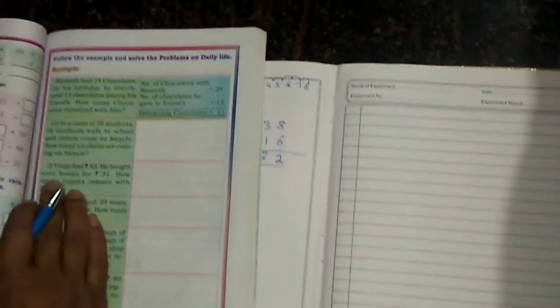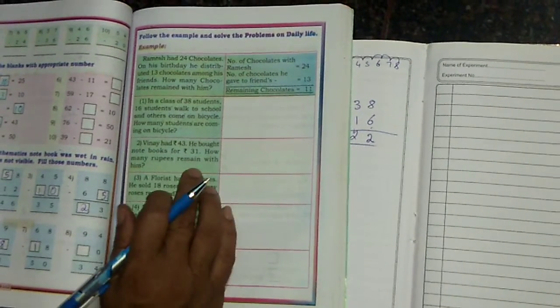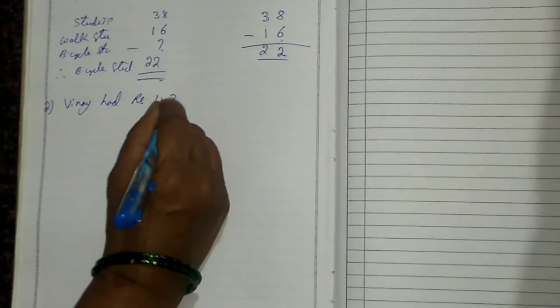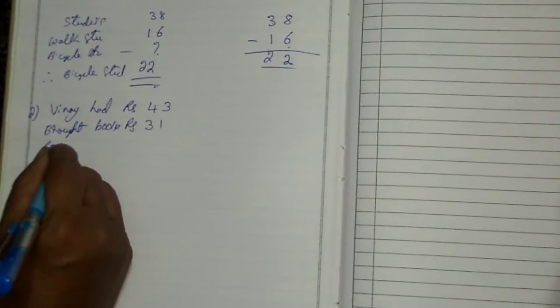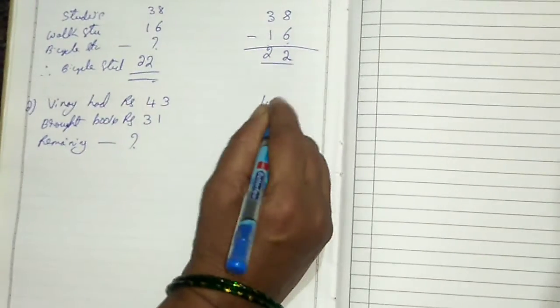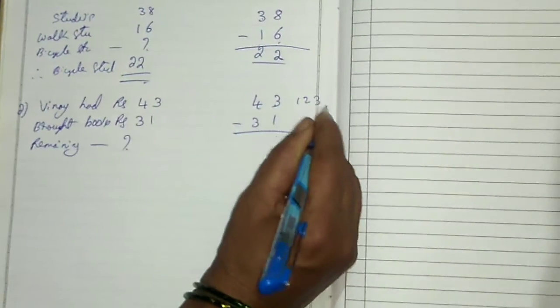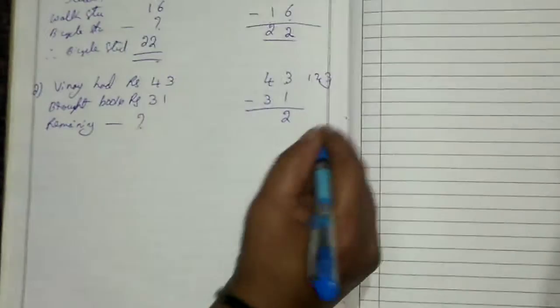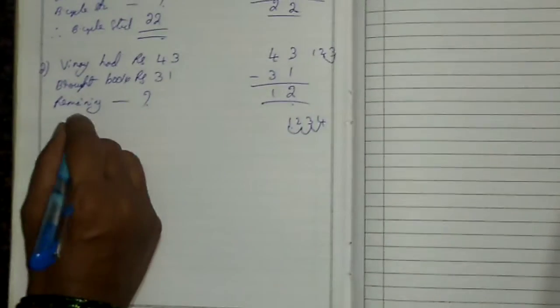Second one: Vinay had rupees 43. He bought notebooks for rupees 31. How many rupees remain with him? Vinay had rupees 43. Brought books — rupees 31. Remaining rupees we don't know, so we have to find. From 43 minus 31: 3 minus 1 — 1, 2, 3, minus 1 is 2. 4 minus 3 is 1. Remaining rupees is 12.